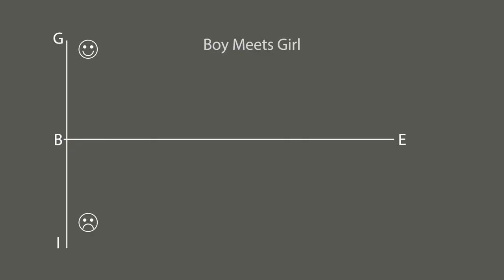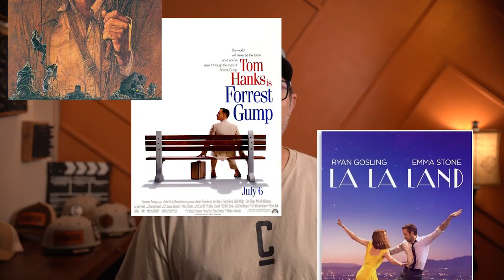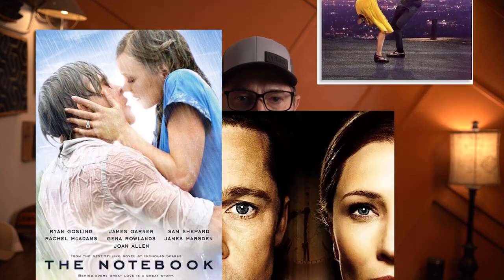Next up, we have the classic Boy Meets Girl. Now, this isn't just about romance. It's about any story where things start to improve, hit a snag, and then resolve, often with a character achieving a goal or finding happiness. It's a shape full of anticipation, conflict, and resolution.